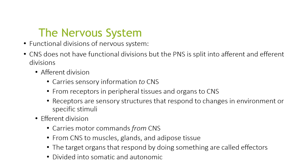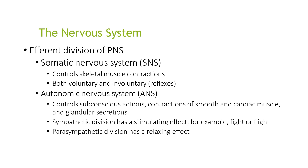The efferent division, on the other hand, carries motor commands from the central nervous system to the muscles, glands, and adipose tissue. The organs that respond by doing something are called effectors, and they are divided into somatic and autonomic. Looking at the efferent division of the peripheral nervous system, there are two types: the somatic and the autonomic.